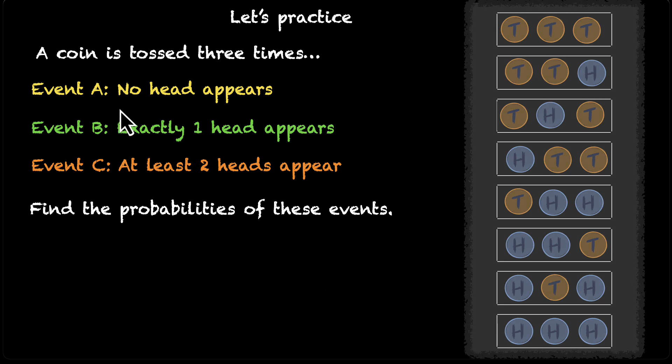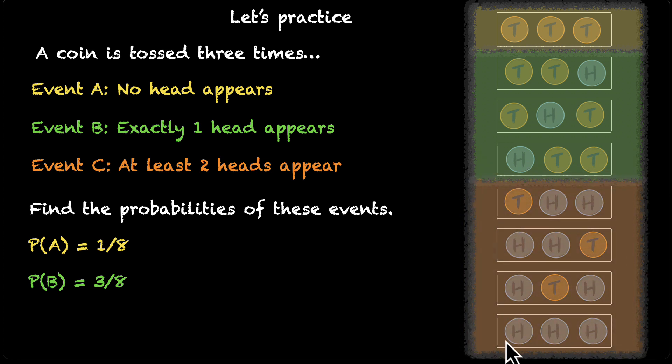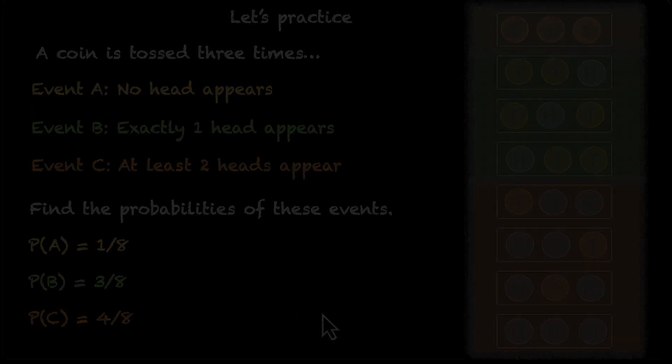The first one is event A where we have no head. That's the first one. And because all of them are equally likely, we can say that the probability of this event is 1 by 8 because there are 8 such events. Similarly, for exactly 1 head, we have these 3 events and all of them are equally likely. So the probability is 3 by 8. And for at least 2 heads, we have these 4 events. All 4 of them are equally likely. Probability is 4 by 8. That's how you calculate the probability in case of equally likely events.